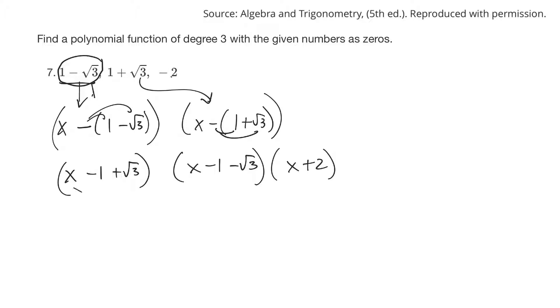So then I would multiply all this stuff together, and then multiply the minus 1 by everything. I'll go ahead and do it. So x times x is x squared minus x minus root 3x. And then minus x plus 1 and plus root 3. And then plus root 3x minus root 3 and minus square root of 9, which is 3. That's a long one. Times x plus 2.